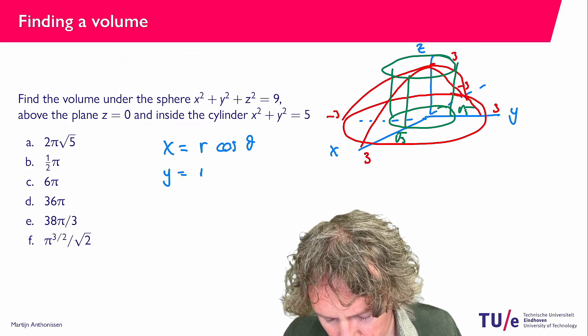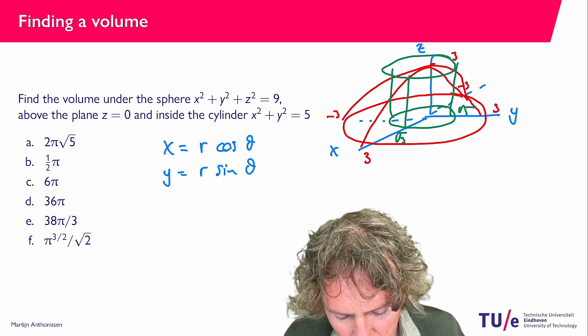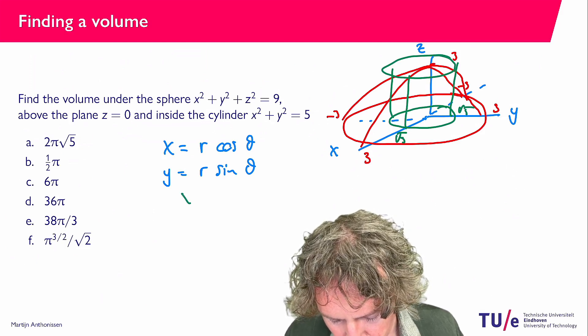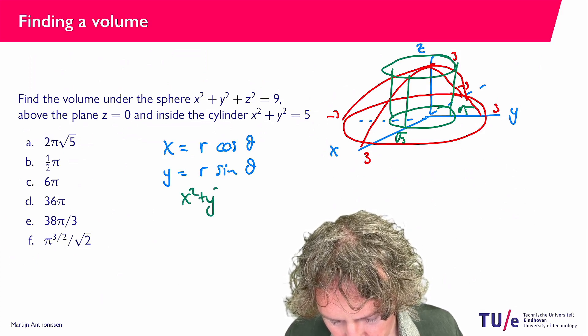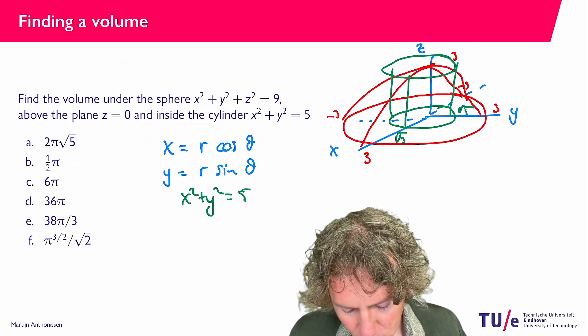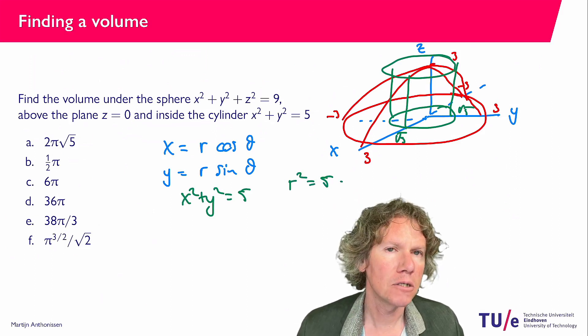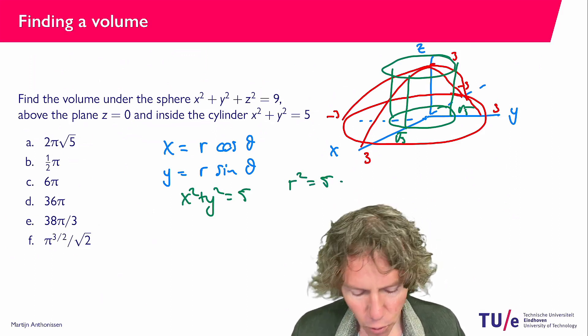y equals r sine theta. Then the green circle x squared plus y squared equals 5. That becomes r squared equals 5. And of course that is a lot easier. Then also the red surface.